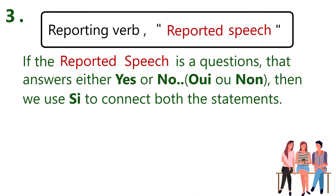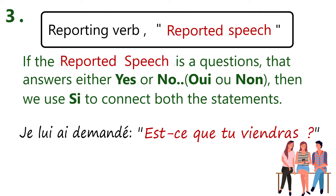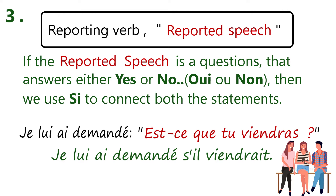Rule number three: if the reported speech is a question that answers either in yes or no, then we use 'si' to connect both the statements. For example, 'je lui ai demandé est-ce que tu viens ?' After changing it into indirect speech the sentence will be: 'je lui ai demandé s'il vient.' We use 'si' because the quoted sentence was a yes/no question. Whenever a question starts with 'est-ce que,' you need to add 'si.'